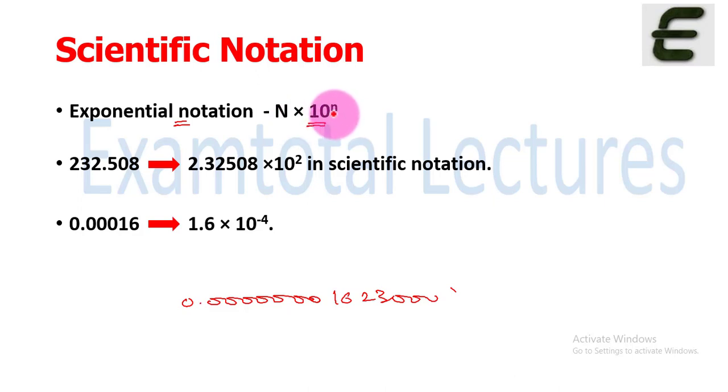Here this small n, which you can see, is an exponent raised to the power, which can be positive or negative value. N is a digit number. Let's take a small example: 232.508. If we write this in exponential form or scientific notation, we have to write the first number, then the decimal, and the other numbers. We move the decimal towards the left, the exponent becomes 10 raised to power 2. For 0.00016, we write it as 1.6 and the decimal moves towards the right, so we add 10 raised to power minus 4.